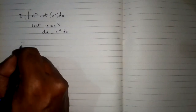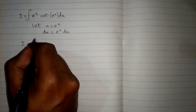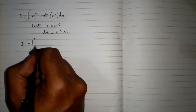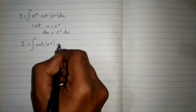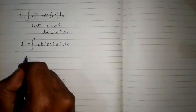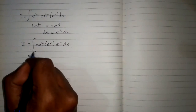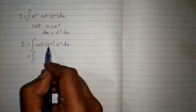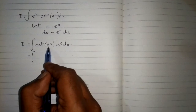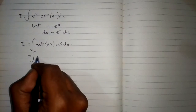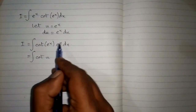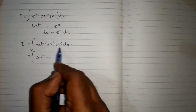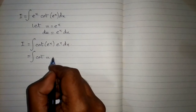The above integral can be written as the integral of cot of e to the power x multiplied by e to the power x dx. Now we can put u in place of e^x, so we have cot u, and in place of e^x dx we can put du.